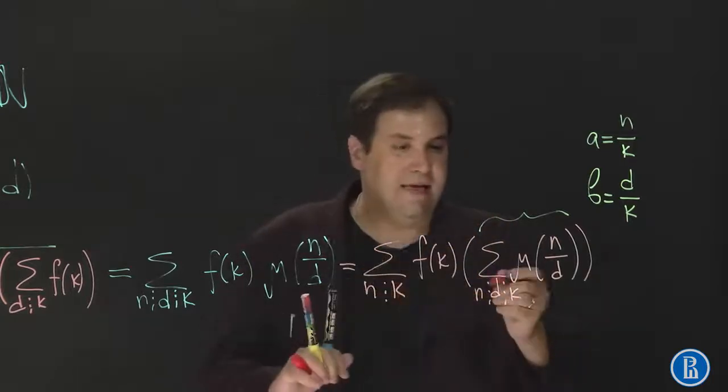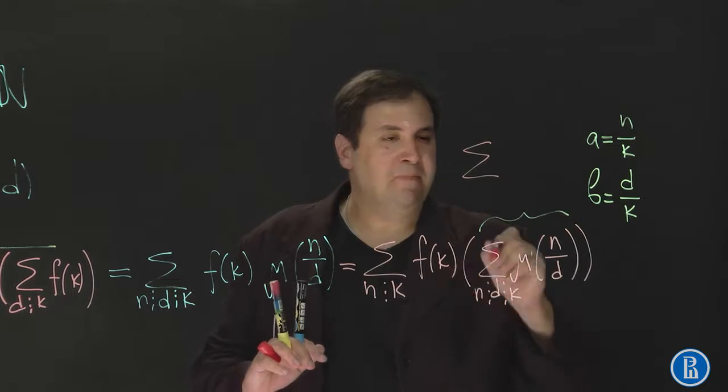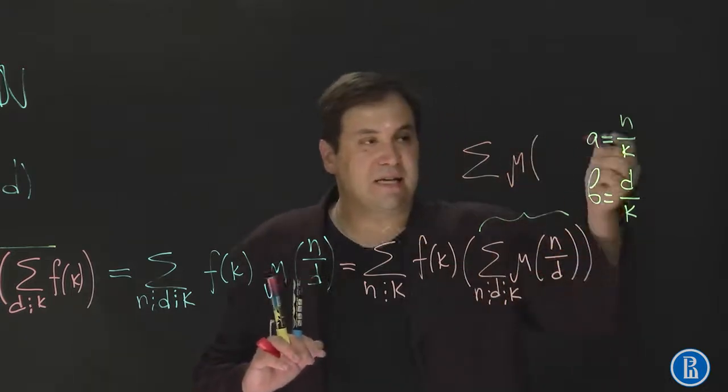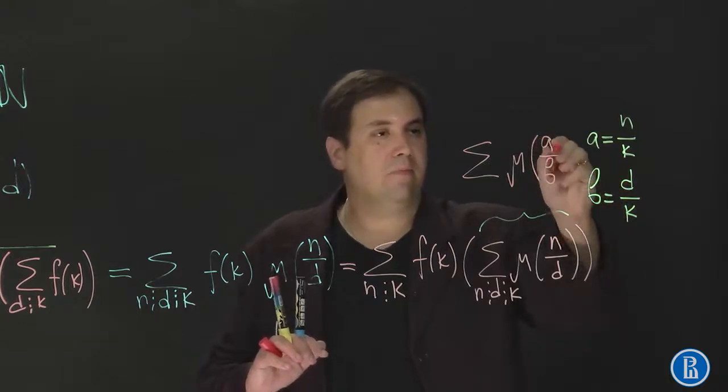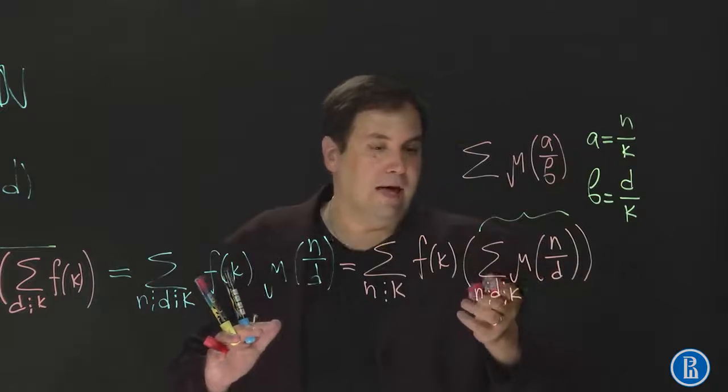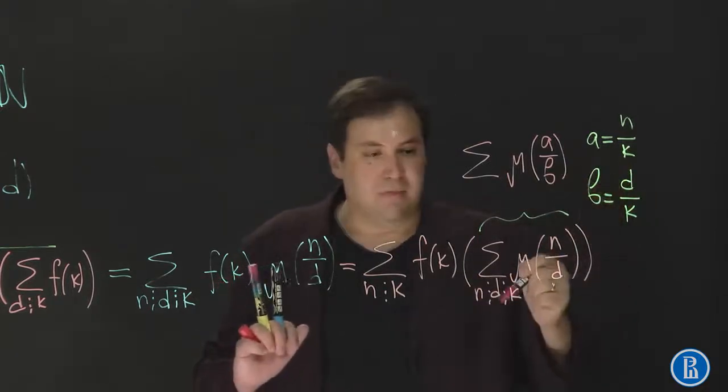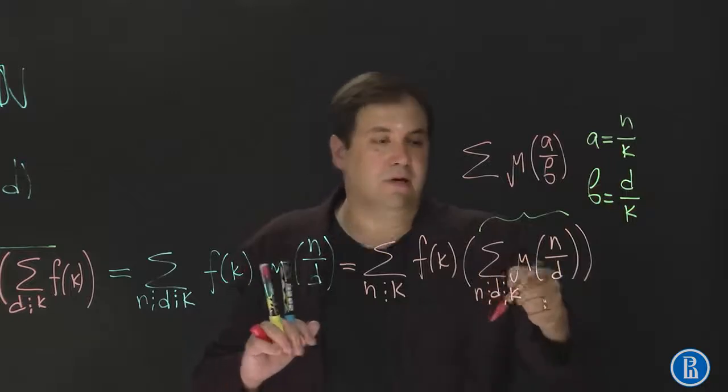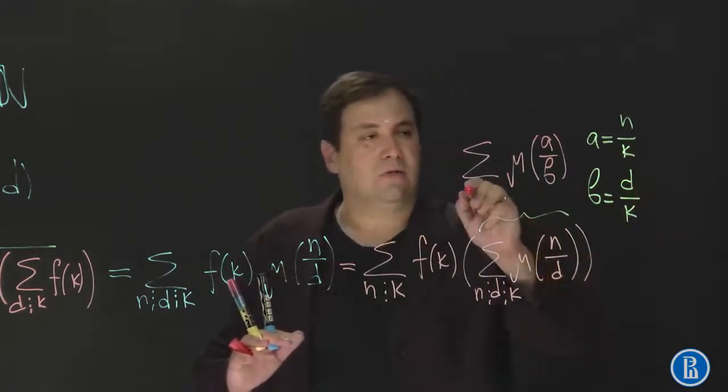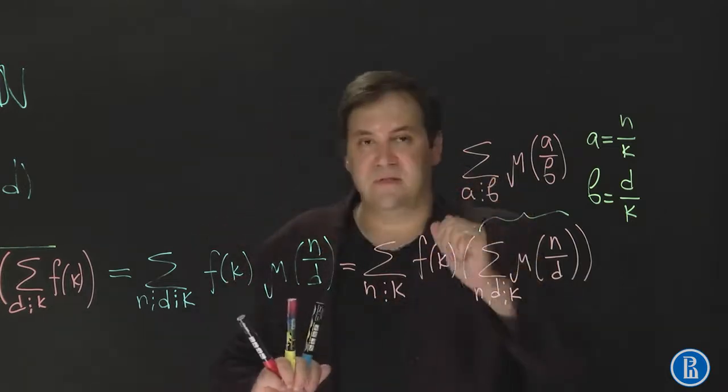Somehow simplify this expression. And then in that case it will be equal to sum mu of, notice that n over d is the same as a over b. Taken over, n should be divisible by d, which means that a should be divisible by b. And both of them are automatically divisible by k because we divided n and d by k. So simply the only condition is a should be divisible by b.